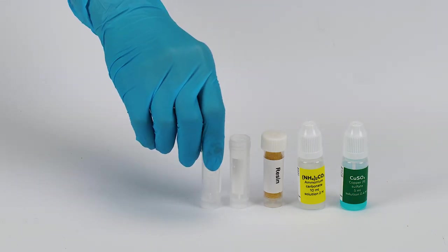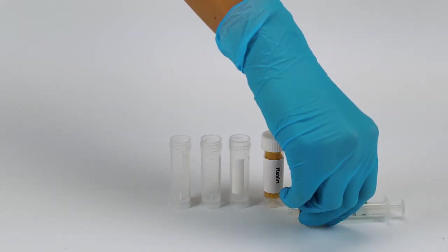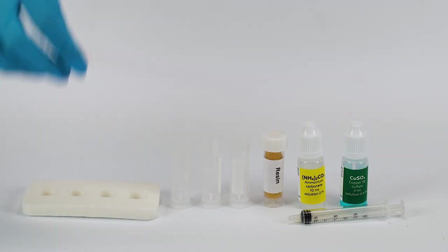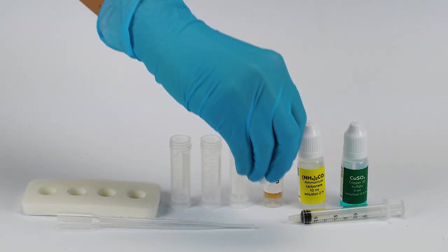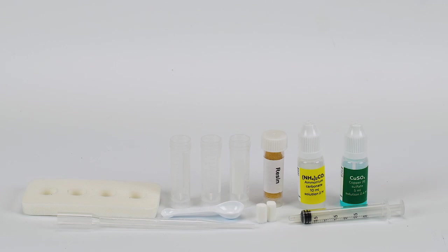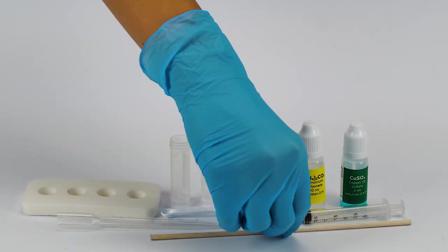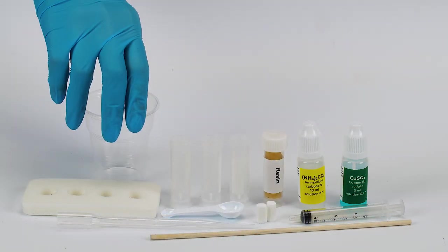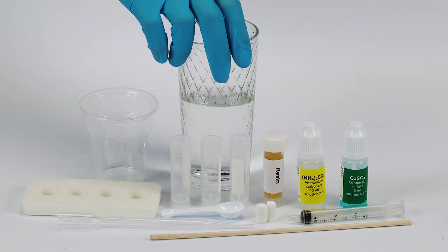Take three vials, a syringe, the vial stand, a filter body, two small cotton cylinders, a measuring spoon, and a wooden stick from the experiment set. Take a plastic cup from the starter kit. Also, prepare some water in advance.